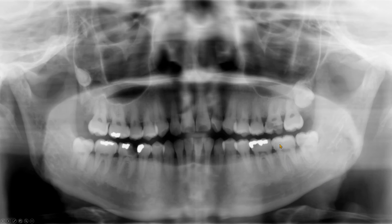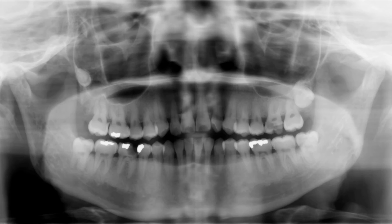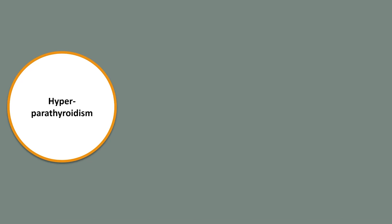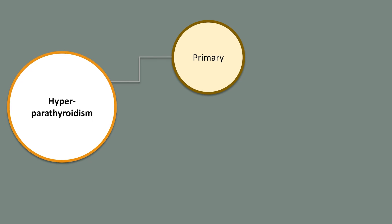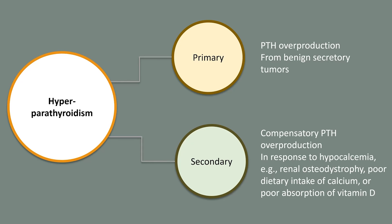If you have a skull radiograph, you may also see a feature known as salt and pepper appearance. These bony findings are typical of hyperparathyroidism. Hyperparathyroidism can be of two types. The primary hyperparathyroidism causes overproduction of PTH from a benign adenoma of one of the four parathyroid glands. The secondary hyperparathyroidism is a compensatory overproduction of PTH, which can occur in response to conditions that cause hypocalcemia, such as renal osteodystrophy, poor intake of calcium, or poor absorption of vitamin D.